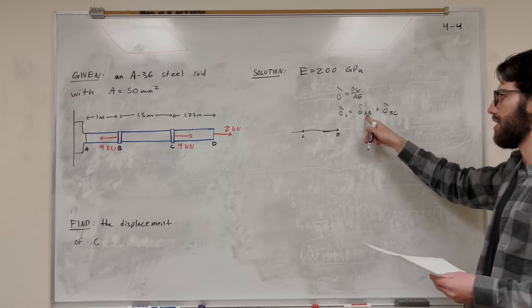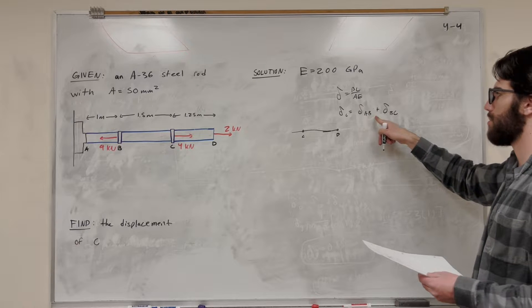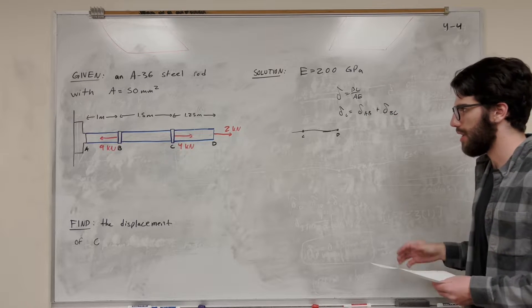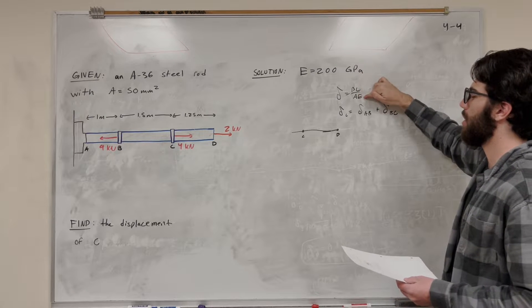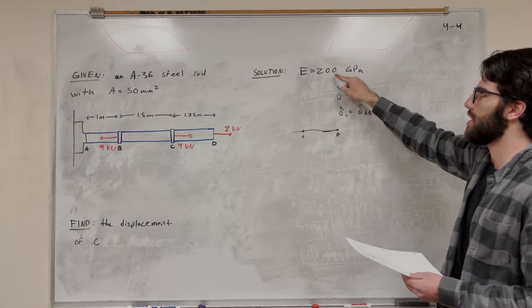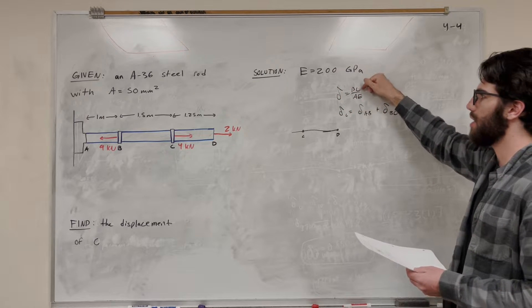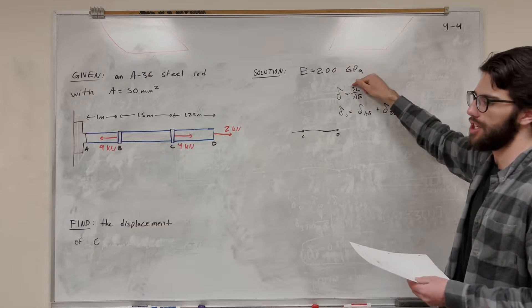So now we have the equation we need. We just need to find the displacement of AB and the displacement of BC. So how are we going to do that? Well, we need to find a couple things. We need this equation. We know area. We know our modulus of elasticity for the A36 steel is 200 GPa.